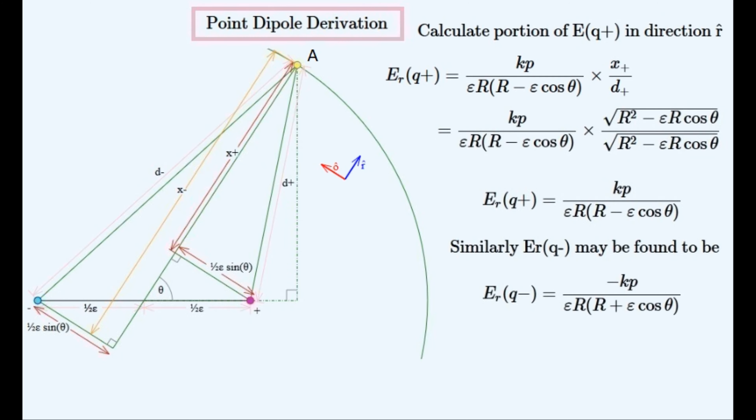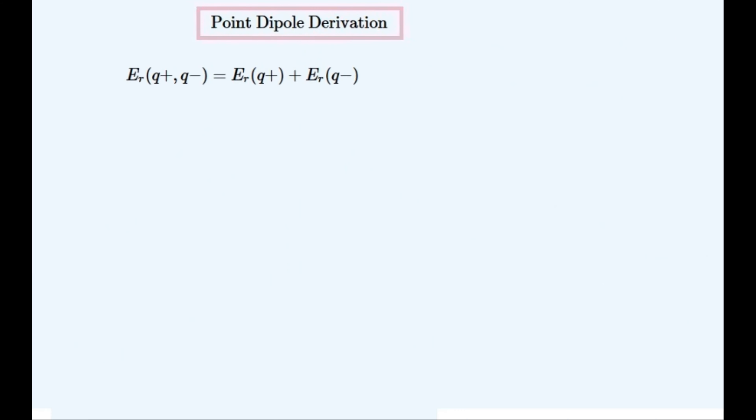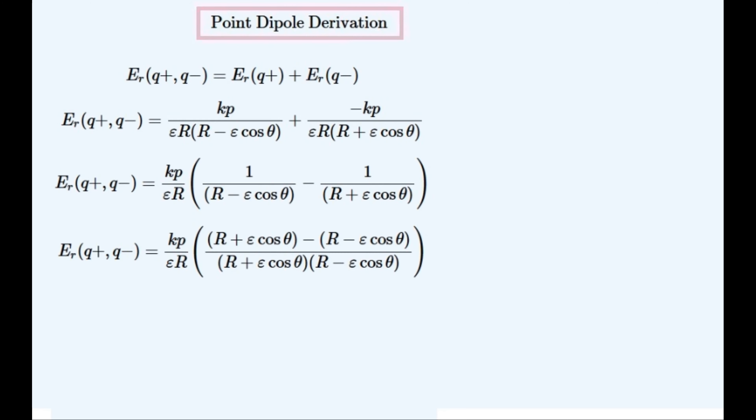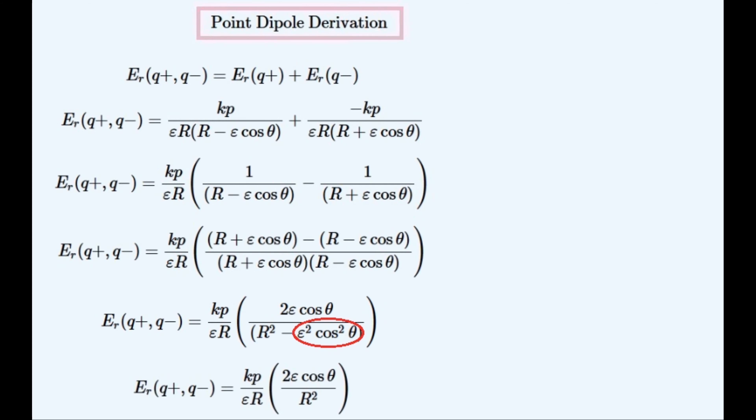The R component of E minus can be found in a similar way. Now to add these two components together to get the total component in the R direction. Notice that they can be added like real numbers because they are in the same direction. Then we substitute the numbers in — there's just a slight difference between them to stop this expression from being zero. Then we factorize this expression and add these fractions using fraction adding methods. Notice that the denominator is now a difference between squares. The epsilon squared term can then be eliminated, thus greatly simplifying this expression.